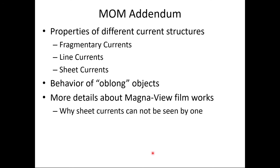Okay, so the model of matter — I'm going to show you three things: properties of different current structures — fragmentary currents, line currents, and sheet currents. That's going to be important along with the next item, which is the behavior of oblong objects. Using those two items I'm going to show you more complete detail about how the two different types of MagnaView film work, and it's going to be really an eye-opener.